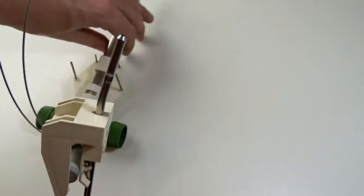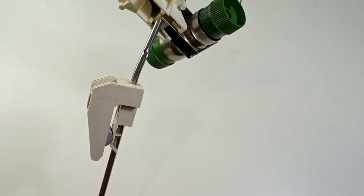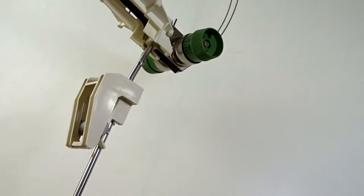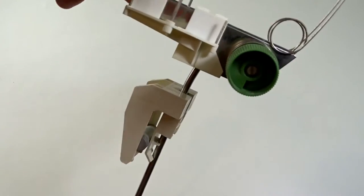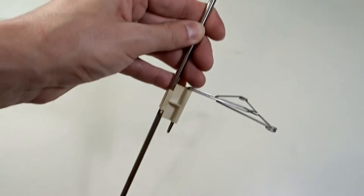Attach the yarn guides onto the curved end. It should look like this.